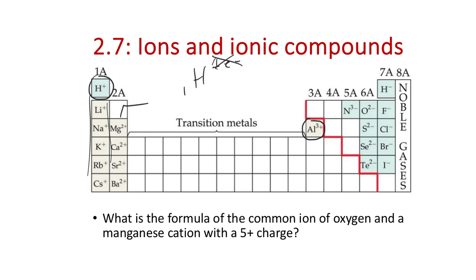Shared electron pairs are different in nature from ionic bonding. Among non-metallic elements bonding with each other, they tend to form shared electron pairs, where electrons are shared simultaneously between nuclei, as opposed to being donated as in ionic bonding.